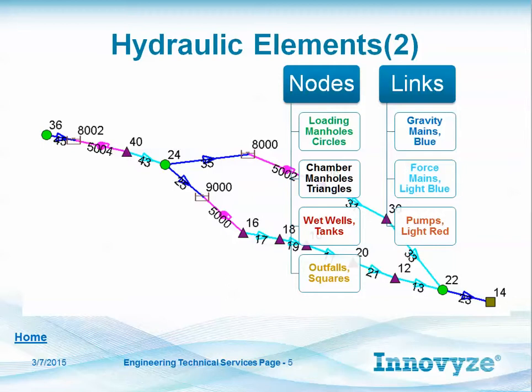There are strict rules inside InfoSewer and H2O MapSewer. You cannot run the model with a chamber node connected between two gravity mains, and you can't put a loading manhole between two force mains. Particular configurations are allowed or disallowed. One of the things we added the advanced force main solution for was to allow joining force mains together — for example, two force mains joining are disallowed in the steady state solution without the advanced force main solution, which allows you to do iterations.